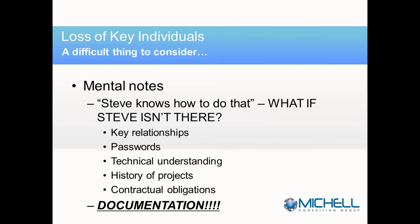Loss of key individuals is a very difficult thing to consider. We talk about mental notes — every organization has someone like Radar O'Reilly from MASH, who truly ran everything. Steve knows how to do this, Radar knows how to do that — but what if he's not there? Who holds all the passwords for your network? Who has the technical understanding? Who knows the key relationships with your most important clients? Who knows the details of your contractual obligations? The key to all this is creating a plan, and it starts with documentation — documenting the processes and procedures in your business that truly make you go. People don't really like to do documentation, but it needs to be done.